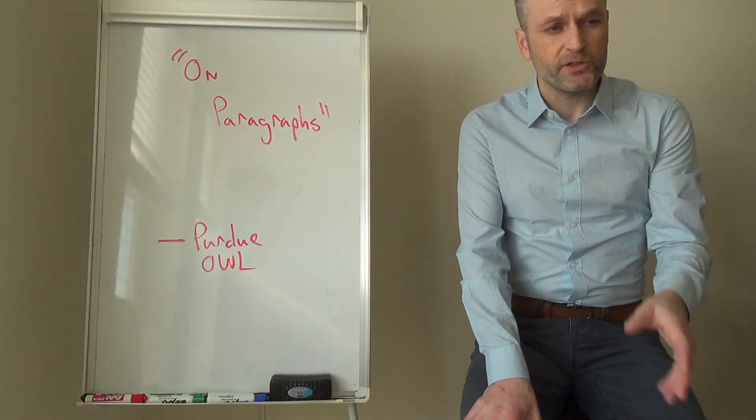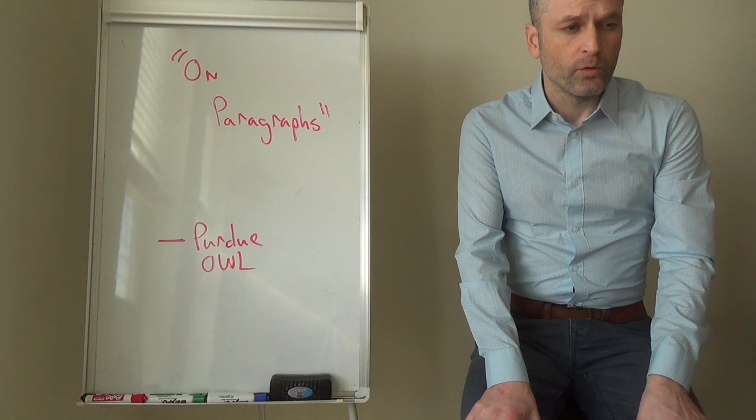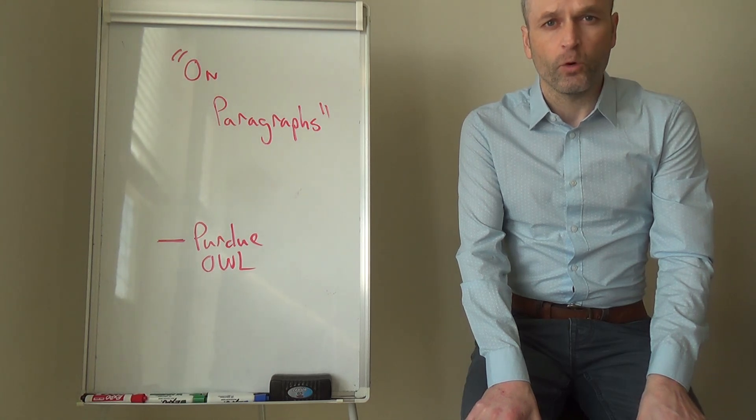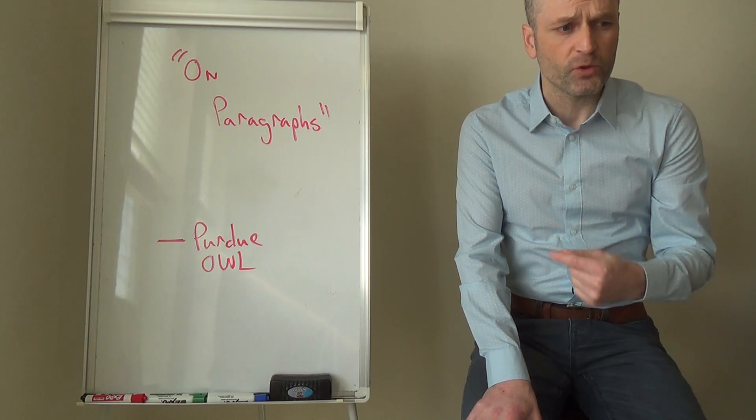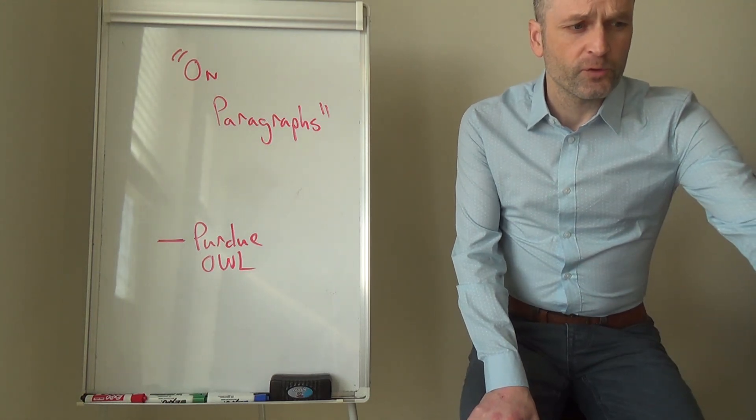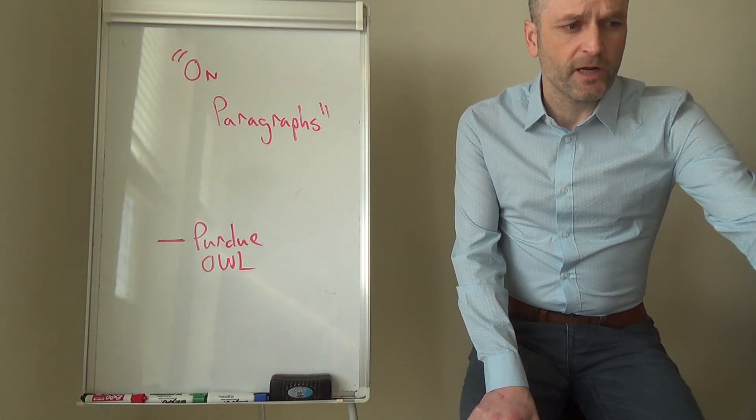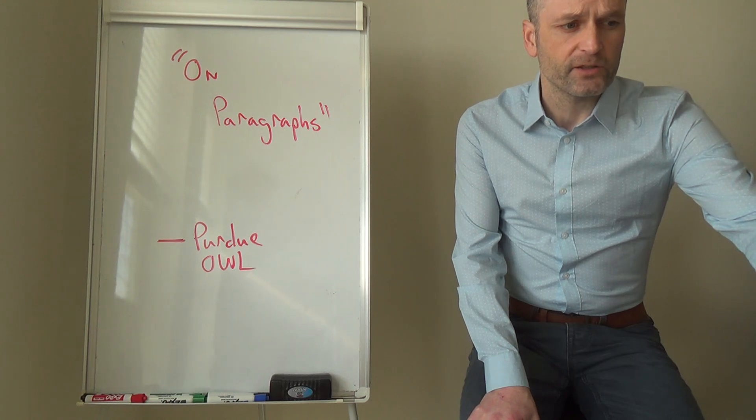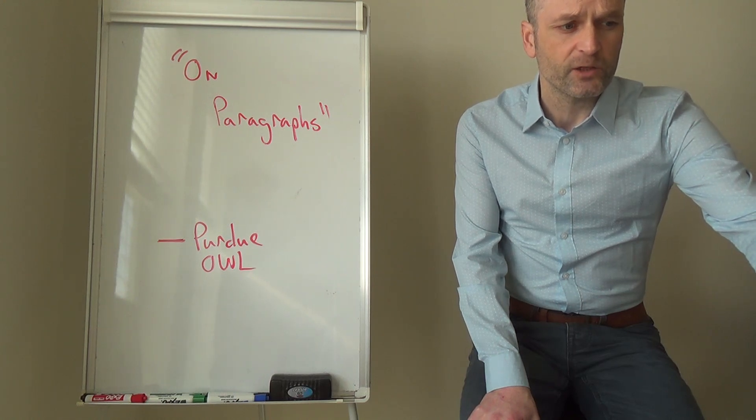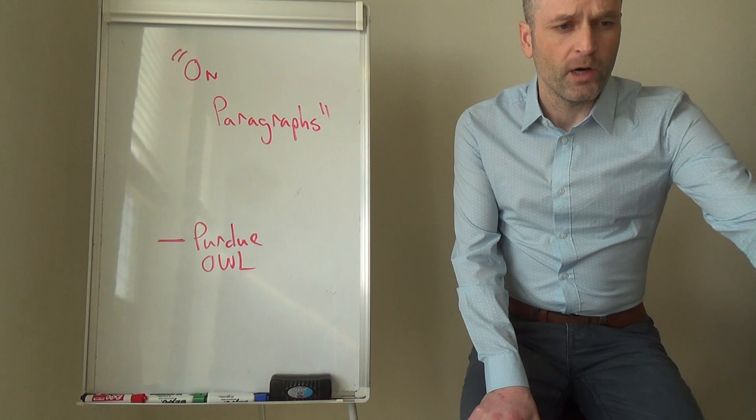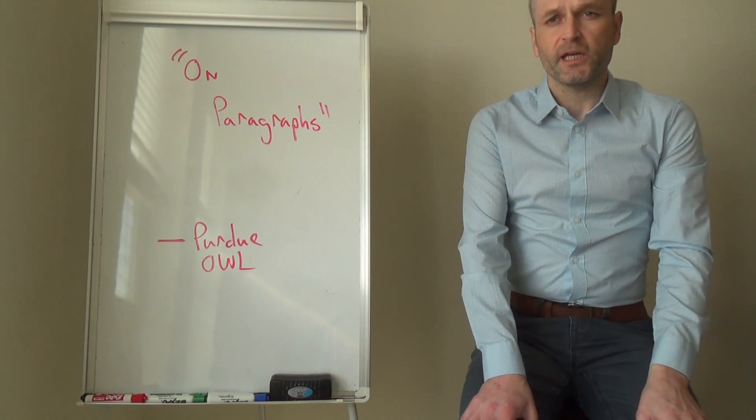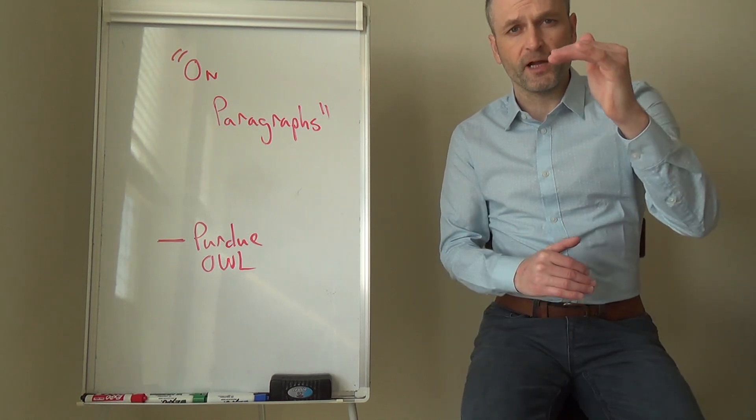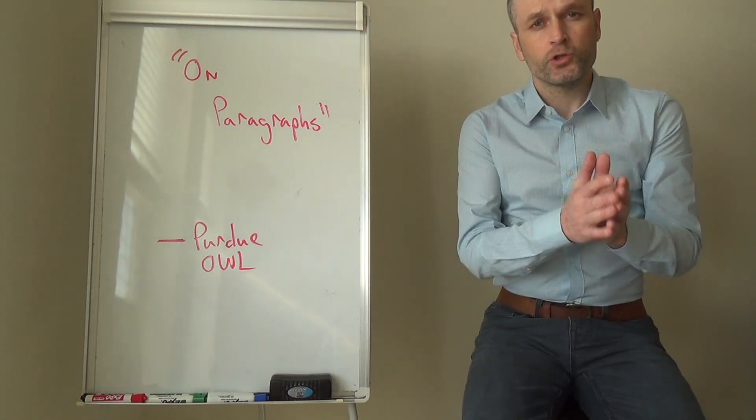The Purdue OWL with this web page covers things as a definition on a paragraph. It also has a basic rule for paragraphing, which is keep one idea per paragraph. It further breaks down the elements of a paragraph as unity and coherence, a topic sentence, adequate development, and so on.